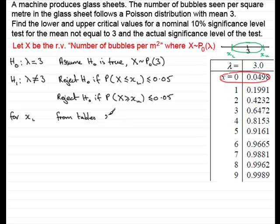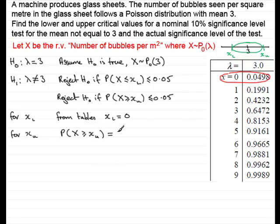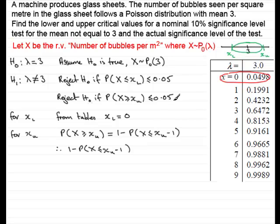For the upper critical value X_U, we need P(X ≥ X_U) ≤ 0.05. To work this out from the tables, we compute 1 minus P(X ≤ X_U − 1). This quantity must be less than or equal to 0.05, so we write: 1 − P(X ≤ X_U − 1) ≤ 0.05.